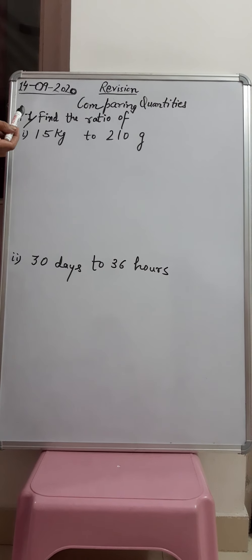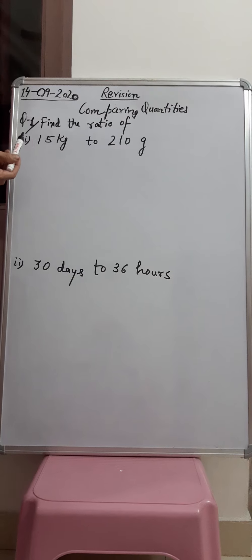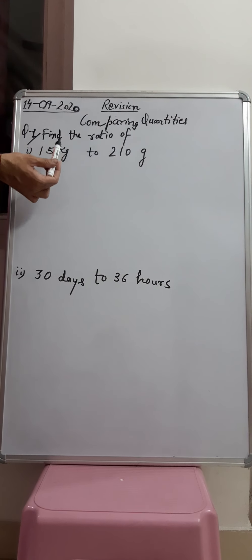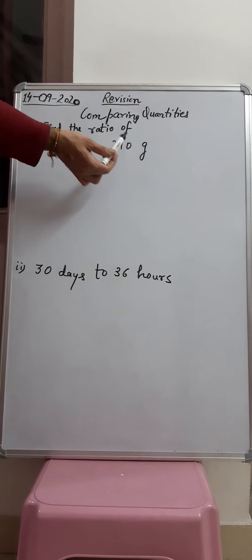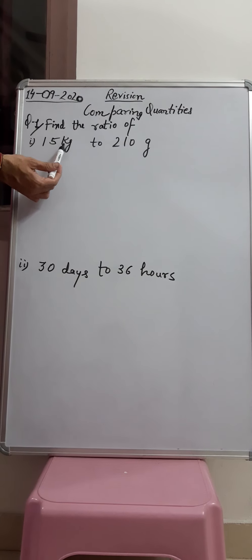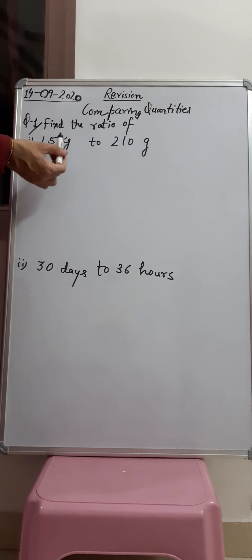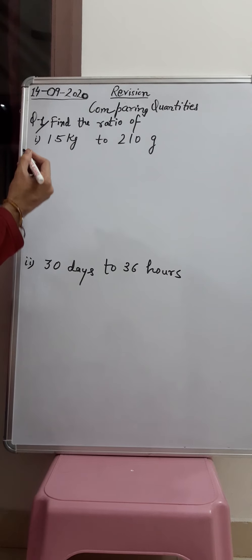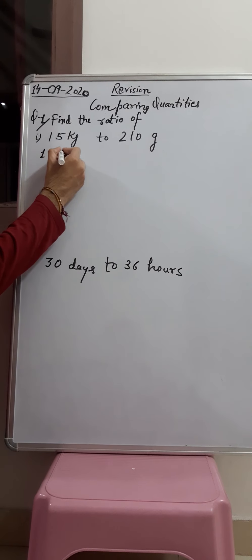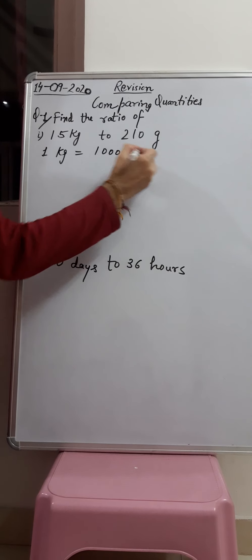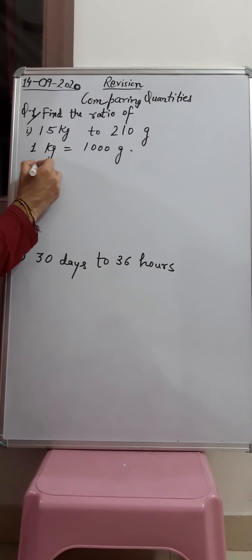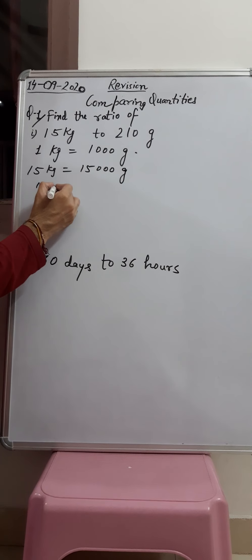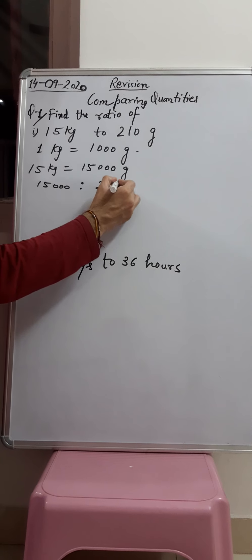Question number one: find the ratio of 15 kg to 210 grams. Whenever we have to find a ratio, the two things being compared have to be in the same units. Here one is in kg and one is in grams, so we have to change the bigger into smaller — that means kilograms into grams. We know that 1 kg equals 1000 grams, so 15 kg means 15,000 grams. So we have 15,000 ratio 210 grams.